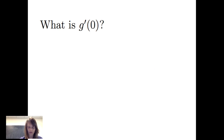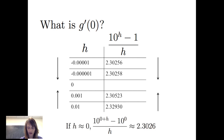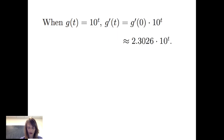So in this case, if I've got g of t equals 10 to the t and I need g prime of 0, I can consider a numerical approach and recall that h is close to 0 and on either side of 0. Then I can calculate the difference quotient 10 to the h minus 1, all over h. And for these values of h that are close to 0 on either side, 10 to the h minus 1 all over h is very close to 2.3026. So in other words, when I've got the exponential function 10 to the t, the derivative of g with respect to t is g prime evaluated at 0 times 10 to the t, or approximately 2.3026 times 10 to the t.